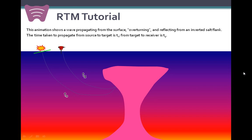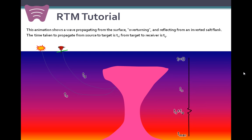This animation shows a wave propagating down from the surface, overturning because of velocity refraction, and reflecting from an inverted salt flank. The time it takes to propagate this wave from the source to the target is TS seconds, and from the target back to the receiver, TG seconds. On the right, we see a time trace in PowerPoint form.